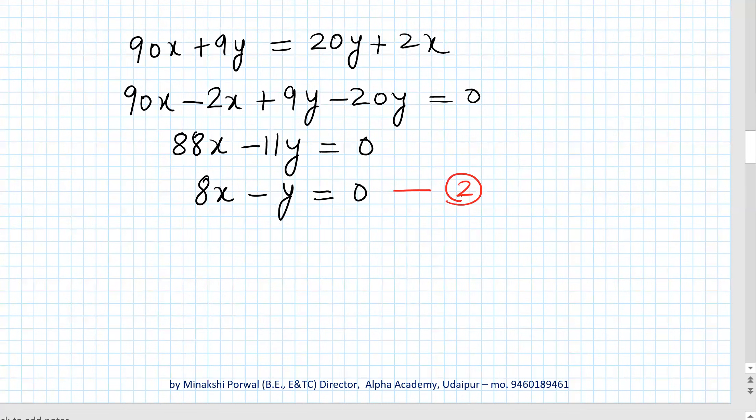Now we have two equations: x plus y equals 9, this was equation 1, and 8x minus y equals 0, this is equation 2. From equation 2 we can solve it by substitution method. Y will be equal to 8x.